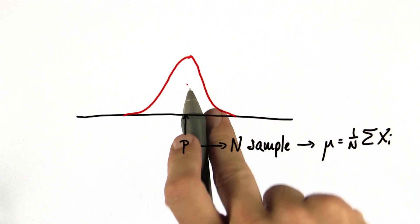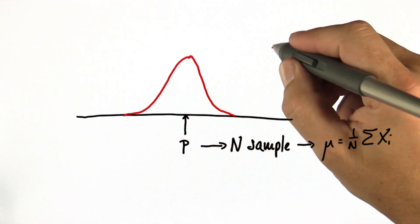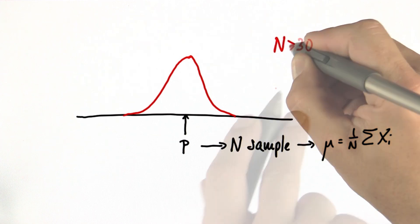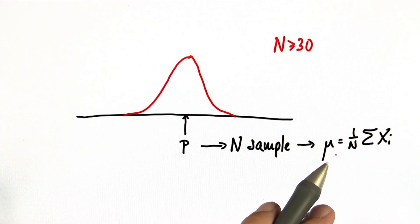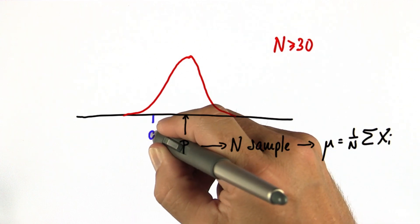And now we'll be using the central limit theorem. For large n, say n larger or equal to 30, we know that the distribution of μ's you might observe is Gaussian.